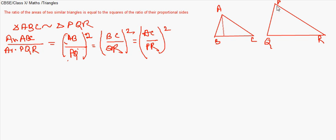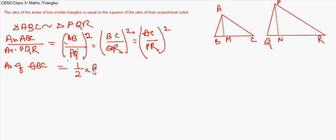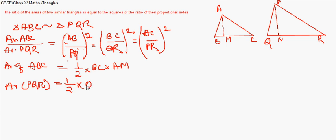To do this, we need altitudes. I'm drawing altitudes from A to BC and from P to QR. I name these altitudes AM and PN respectively. Now in triangle ABC, the area is half base times altitude.